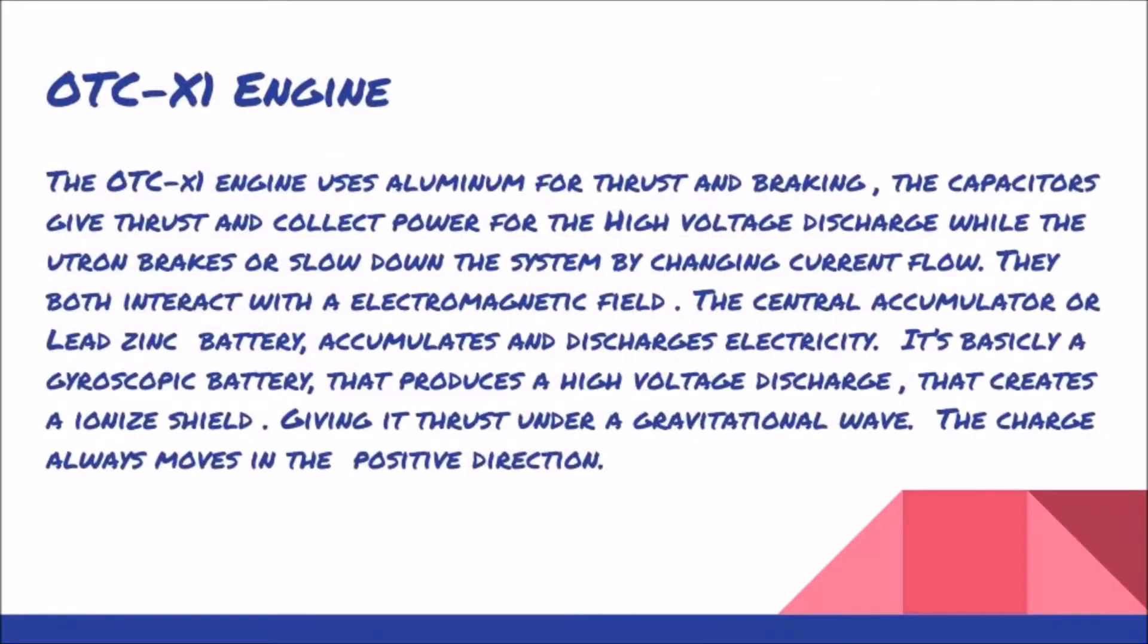The OTC X1 engine uses aluminum for thrust and braking. The capacitors give thrust and collect power for the high voltage discharge, while the eutron brakes or slows down the system by changing the current flow. They both interact with the electromagnetic field. The central accumulator or lead-zinc battery accumulates and discharges electricity. It's basically a gyroscopic battery that produces high voltage that creates an ionized shield.